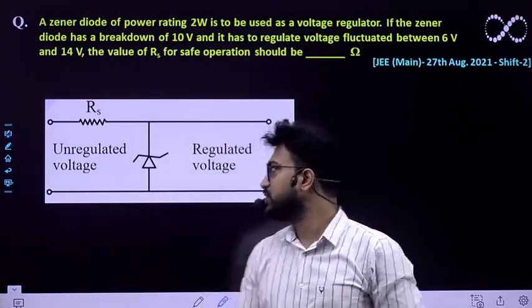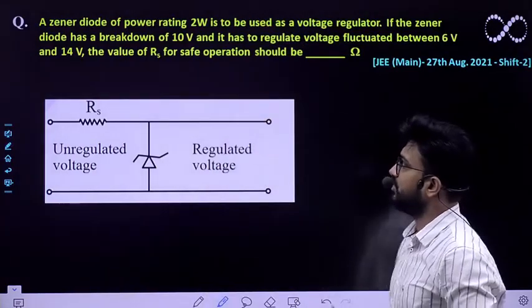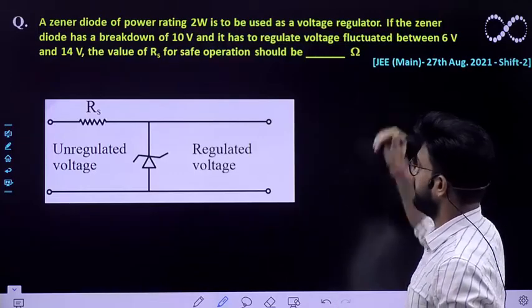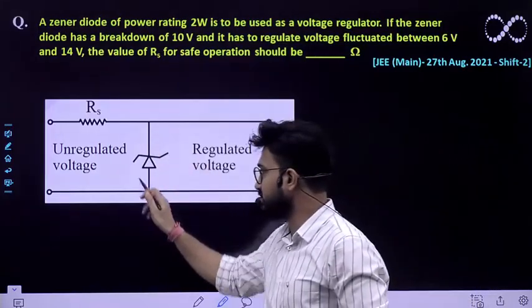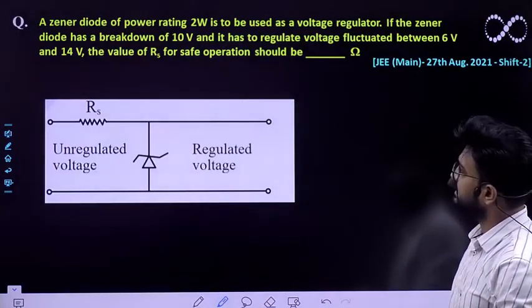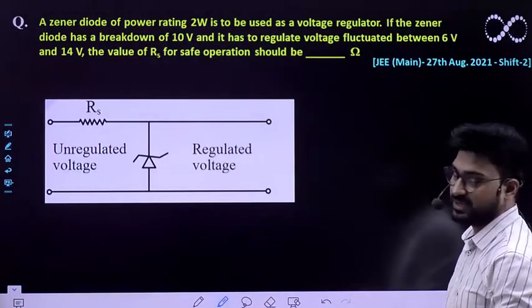So let us see this question first. Question says a Zener diode of power rating 2W is to be used as a voltage regulator. You have been given the setup of Zener diode and it has to be used as voltage regulator. So if the Zener diode has breakdown voltage of 10 volts.